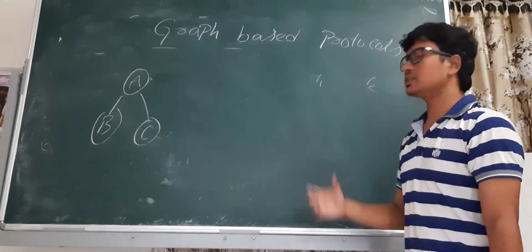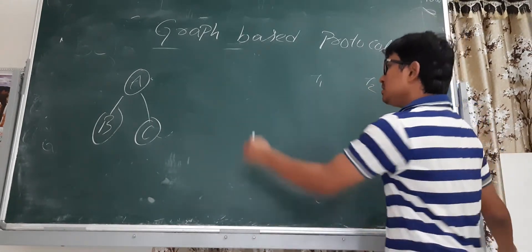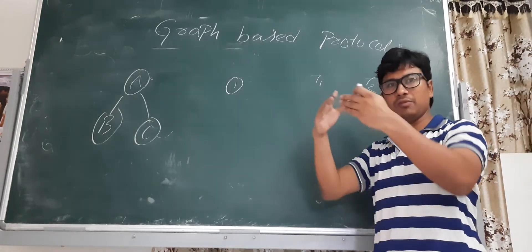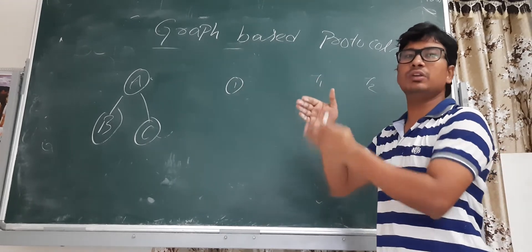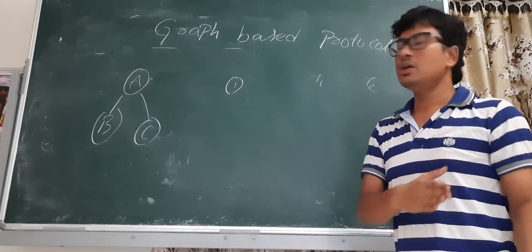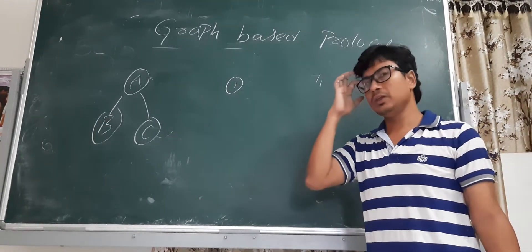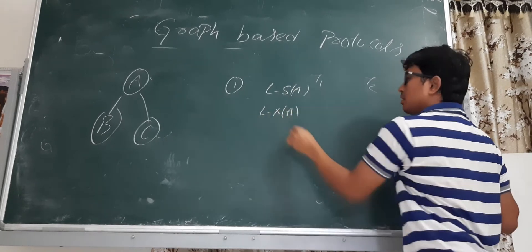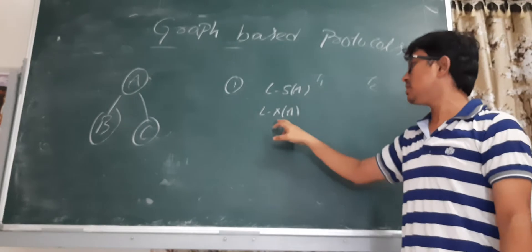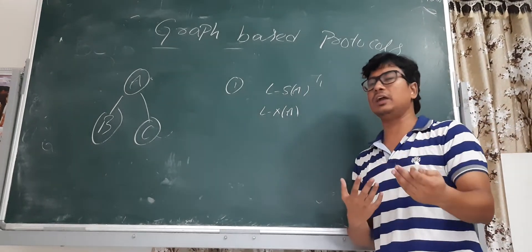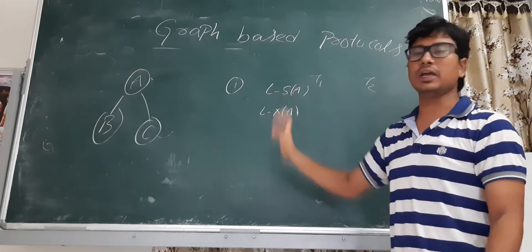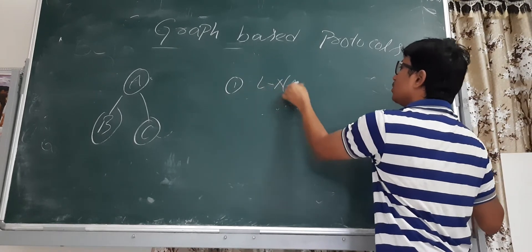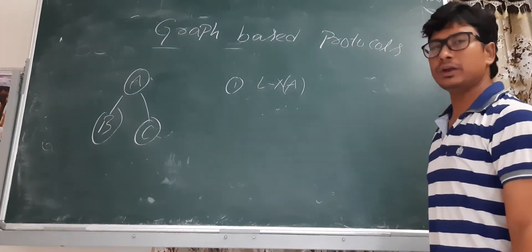Let me discuss a few concepts related to the graph-based protocol. Earlier in two-phase locking we had a growing phase and a shrinking phase — during the growing phase we keep all the locks, during the shrinking phase we release all the locks. In 2PL we use shared locks and exclusive locks: shared lock for read, exclusive lock for both read and write. But in the graph-based protocol, we have only exclusive locks — there are no shared locks.